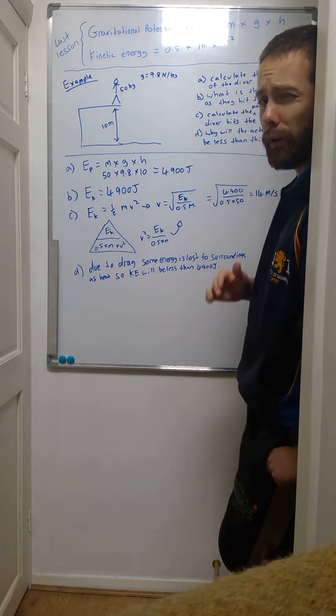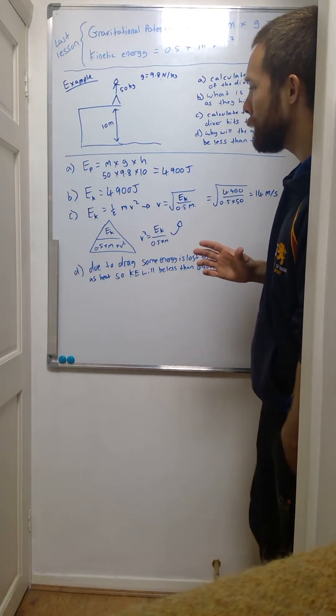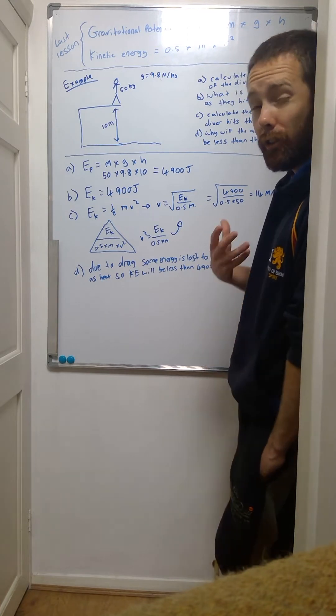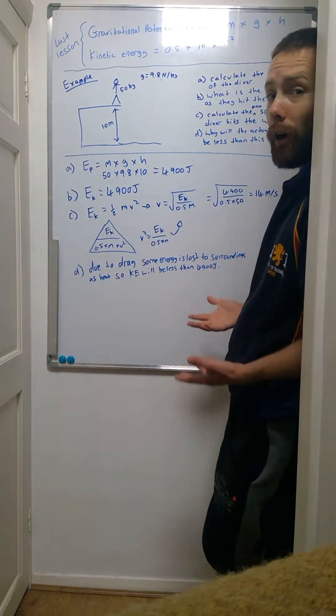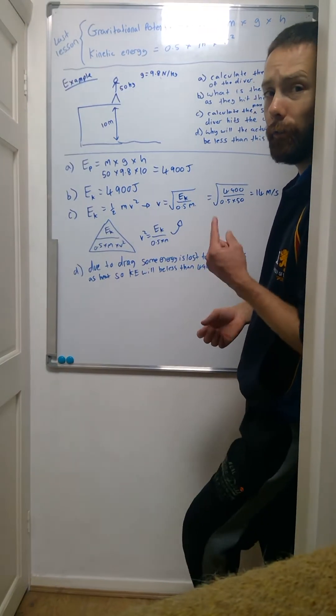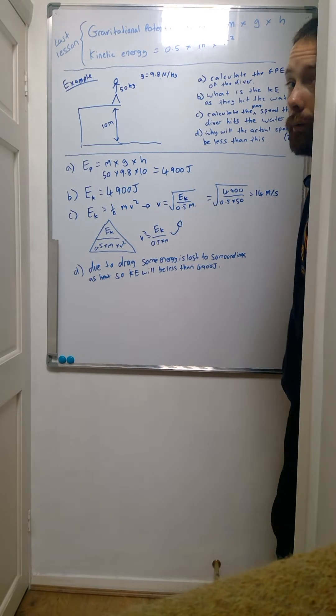Now the second one is really important here. Some people look at this second question and they start trying to calculate the kinetic energy and they say, 'I don't know how to do this because I've not got the speed.' But the key here is firstly it's a one mark question, and secondly it says 'what is' - it doesn't say 'calculate.'